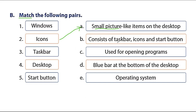Next clue: consists of taskbar, icons, and the start button. We have three things — taskbar, icons, and the start button — that we can find in the system. Yes, we can find them in the desktop. When you open your computer, there is a desktop where we can see the taskbar at the bottom, icons on the screen, and the start button in the corner.